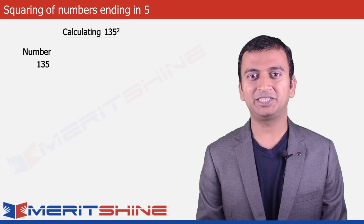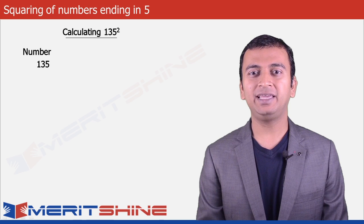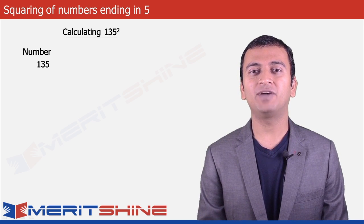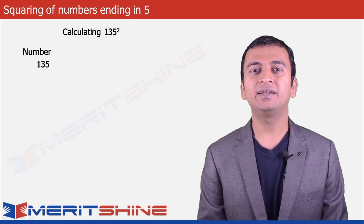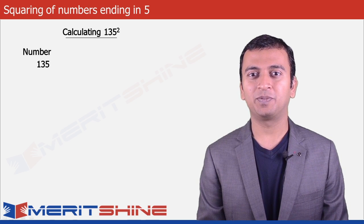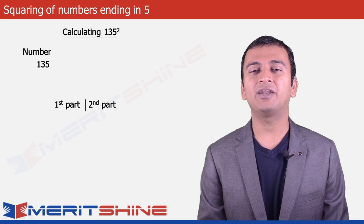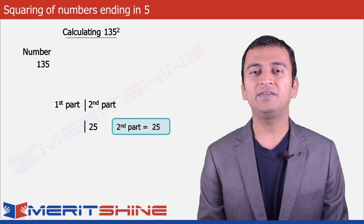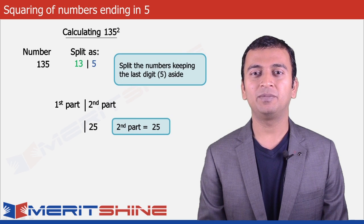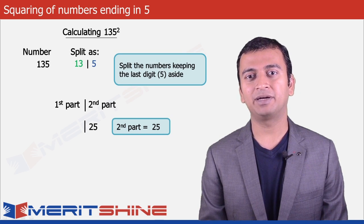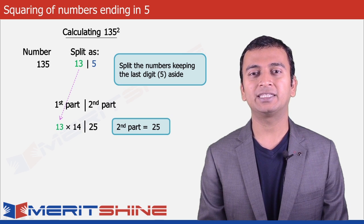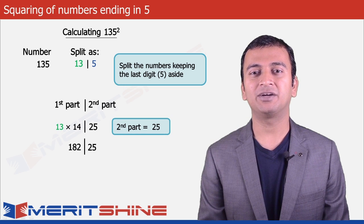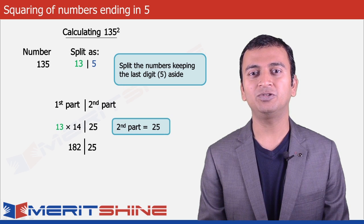An interesting extension would be to find the squares of numbers which end in 5. Let us try finding the square of 135. Here, again the answer would be in two parts. For the second part, we can always put 25. For the first part, we will leave aside the unit digit. So we will be left with 13 and multiply it to the next number which is 14 and get our product as 182. Now we can club these two parts and get our final answer as 18225.